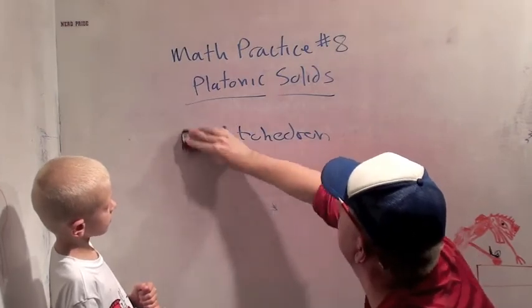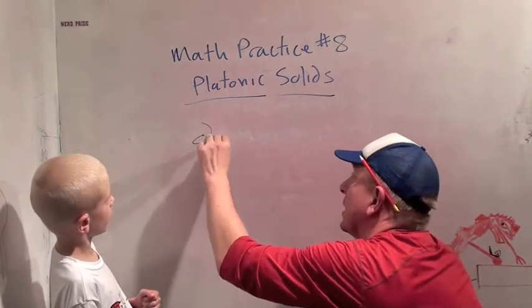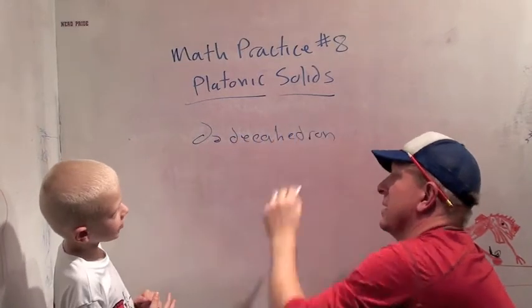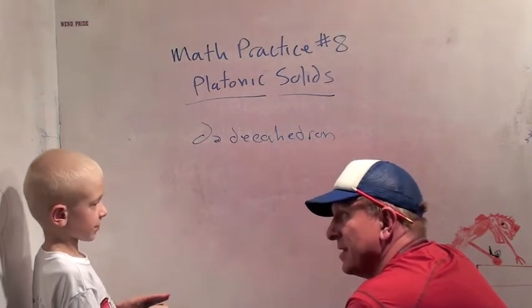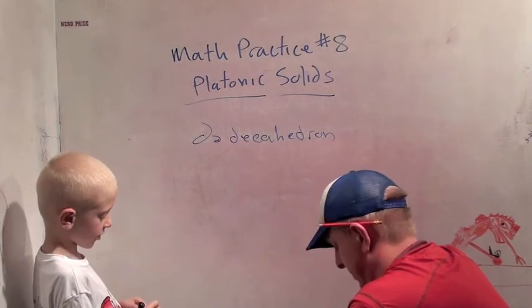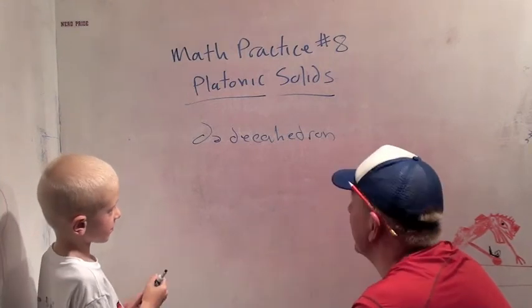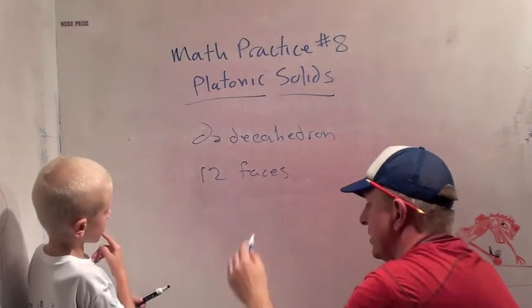Okay. Now, here's a crazy one. I can't draw this one. This one's called a dodecahedron. I've heard that. It has twelve sides. Yeah. How'd you know that? Twelve faces. How'd you know that? I just thought of it. You just thought of it? Yeah. Okay. A dodecahedron has twelve faces.